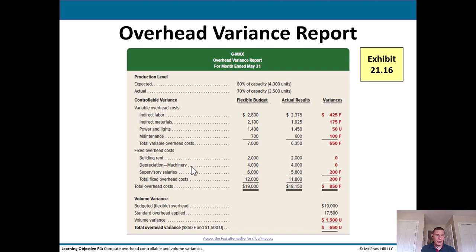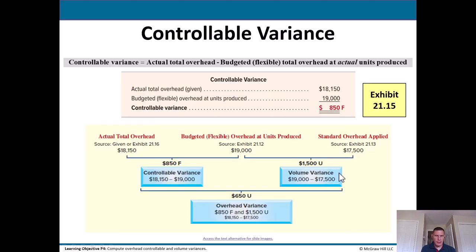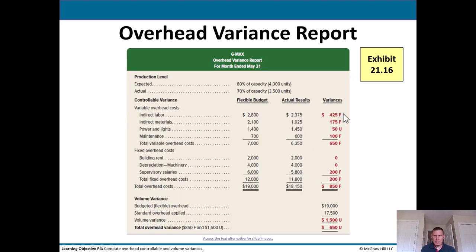The overhead variance report puts it all together. Their expected was 80% of capacity; their actual was only 70%. Using the flexible budget compared to actual, we look at total overhead costs. The $850 favorable controllable variance is the culmination of: $425 favorable indirect labor variance, $175 favorable indirect materials variance, and so on down the line.